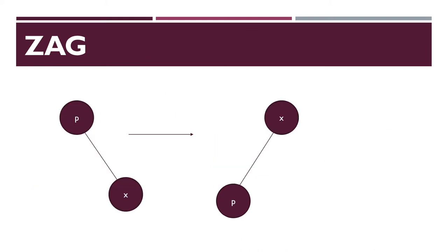Next is zag rotation. This is opposite to zig rotation. Here the nodes are moved towards the left side. The nodes are P and X. After performing zag rotation, they will be X and P. X is the root node and P is the leaf node. So this is about the zag rotation.